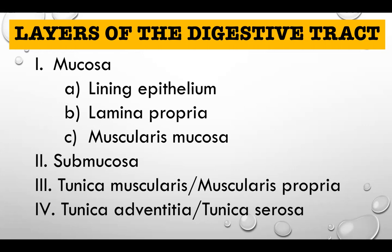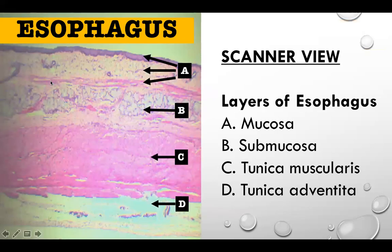What's the difference between adventitia and serosa? Adventitia is adherent to any organ, while tunica serosa is freely located in the peritoneal cavity and is not attached to the organ. We will be repeating this for every organ we study this morning.